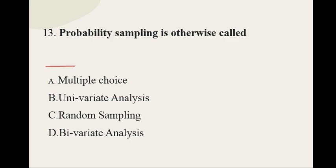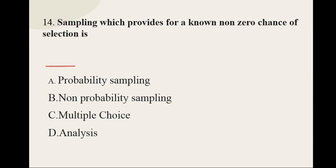Question number thirteen: Probability sampling is otherwise called — and the options are: multiple choice, univariate analysis, random sampling, bivariate analysis. The correct option for question number thirteen is random sampling.